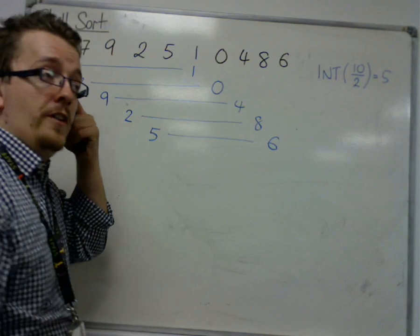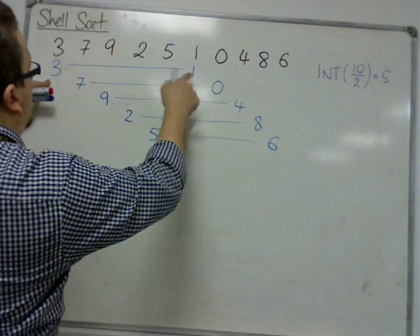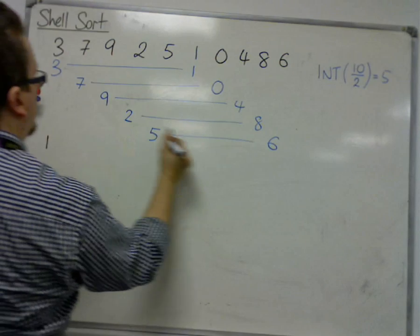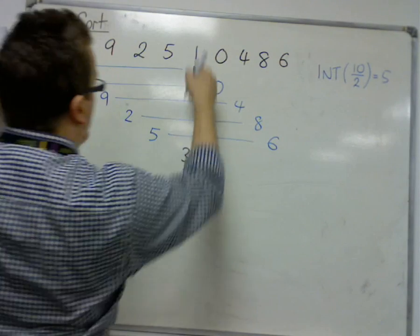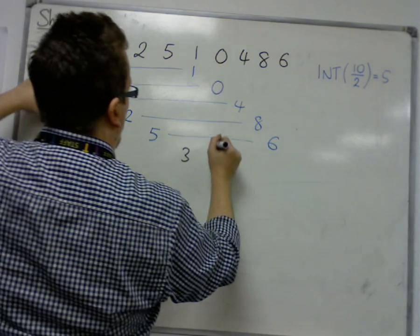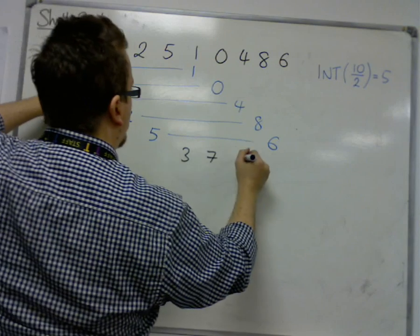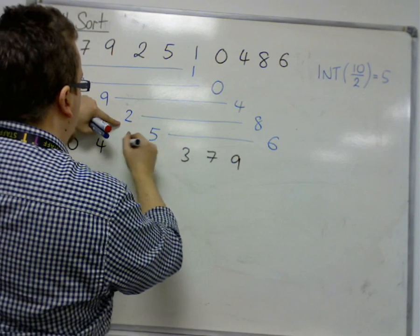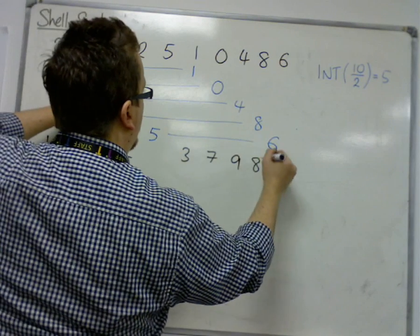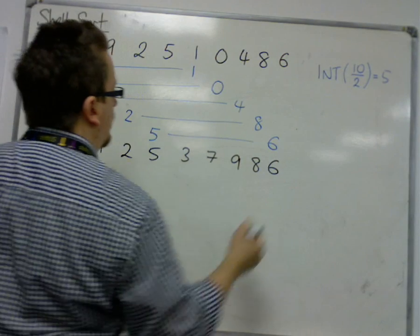And these are going to be my first 5 comparisons. So I make a comparison between the 3 and the 1. That would need a swap. So they're lining up nicely. 7 and 0, that would require a swap. 9 and 4 would require a swap. 2 and 8, they don't require swapping, so they stay fixed. And 5 and 6, they don't require swapping, so they stay fixed.